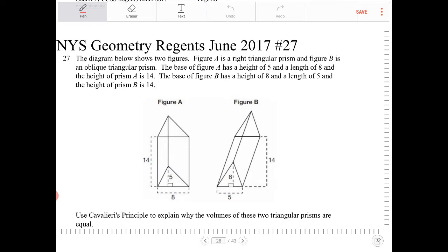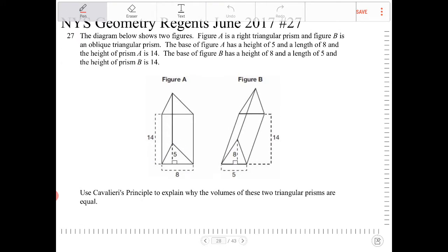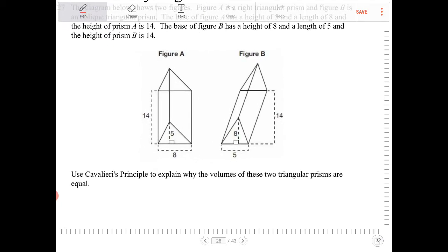So all that information in that first paragraph there is already pre-drawn for us, so there's not much interpretation. But just really try to analyze the diagram there. Use Cavalieri's principle to explain why the volume of these two rectangular prisms are equal.